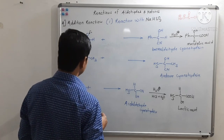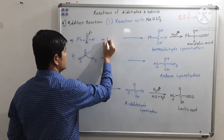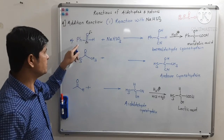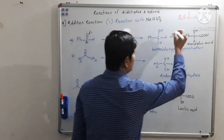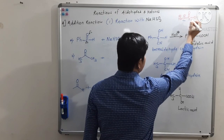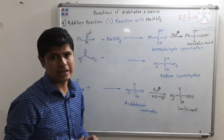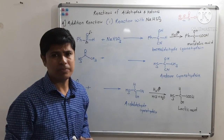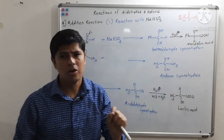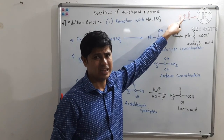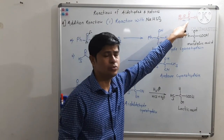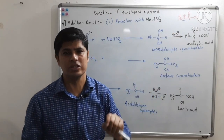We will react benzaldehyde with sodium bisulfite. In NaHSO₃, we have O minus, and sulfur also has a lone pair of electrons. The sulfur atom is more nucleophilic than the O minus. Hence, there will be an addition of sodium bisulfite through the sulfur nucleophile, not the oxygen nucleophile.